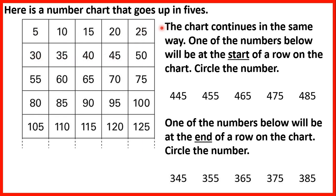The chart continues in the same way. One of the numbers below will be at the start of a row on the chart. Now what we need to spot here is that when we go down the columns, we add 25 each time. So 5 plus 25 is 30, and 30 plus 25 is 55 and so on.